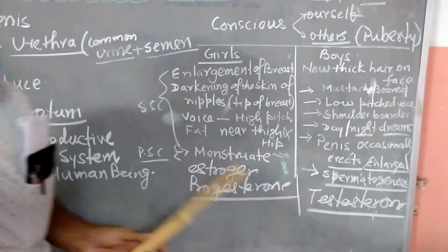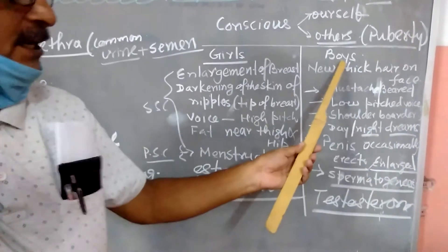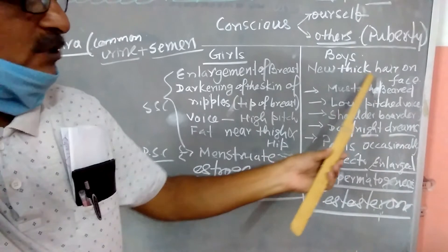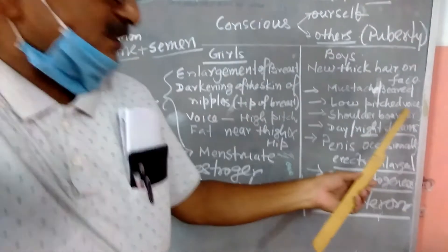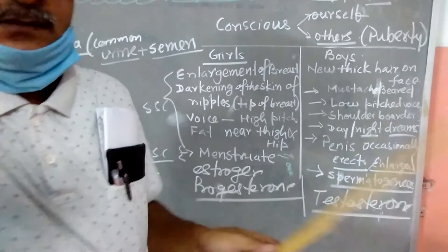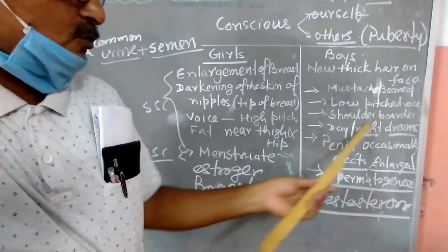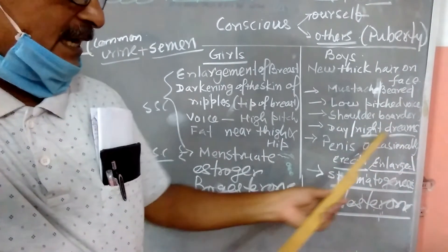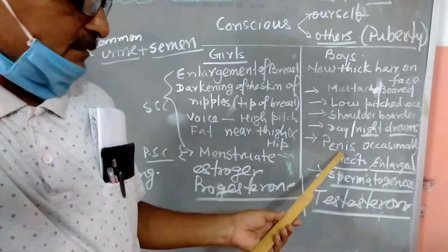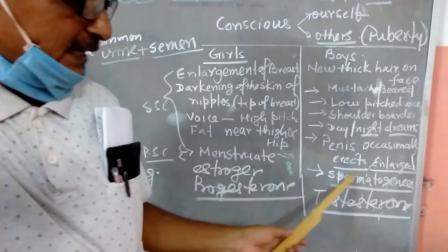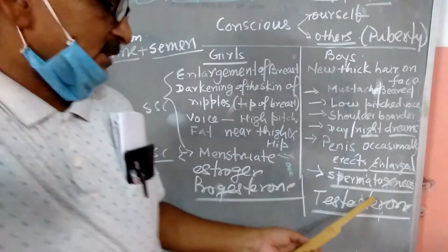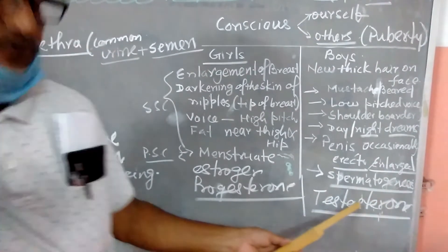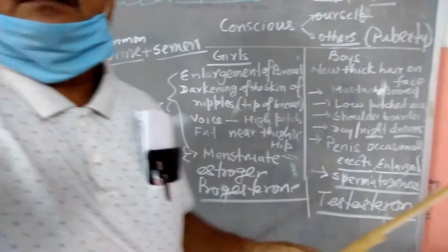In boys, new thick hairs on the face, moustache and beard, low-pitched voice, crack, suddenly the voice become cracked, shoulder broaders, day and night dreams, and penis occasionally erect and enlarge. But spermatogenesis, sperms start to coming out due to the testosterone activity of testosterone.